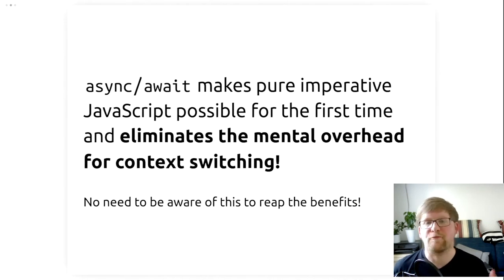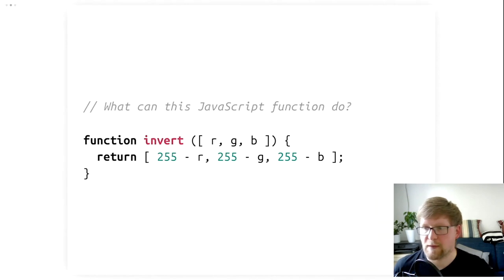So, this is what async await really does. It makes pure imperative programs possible. And this eliminates a whole bunch of mental overhead. This is what it does to your brain. It feels liberating because it is liberating. You don't have to deal with functional programming and with callbacks anymore. And you don't need to be aware that this is what is happening. It just feels much simpler now because it eliminated a whole class of problems. And TypeScript can do something similar.